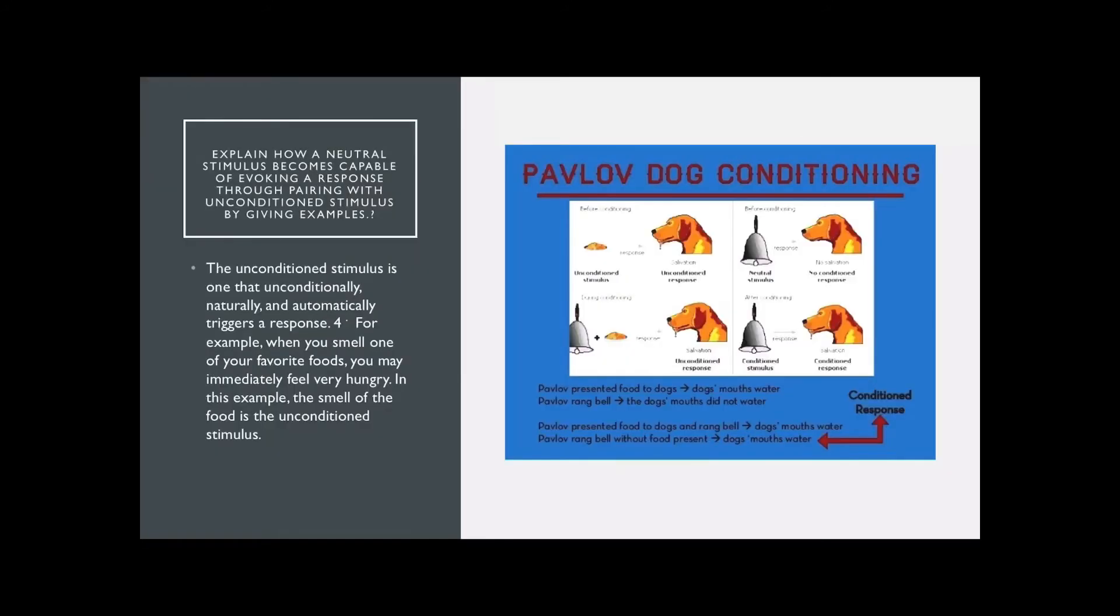Explaining how a neutral stimulus becomes capable of evoking a response through pairing with an unconditioned stimulus. The unconditioned stimulus is one that unconditionally, naturally, and automatically triggers a response. For example, when you smell one of your favorite foods, you may immediately feel very hungry. In this example, the smell of food is the unconditioned stimulus.